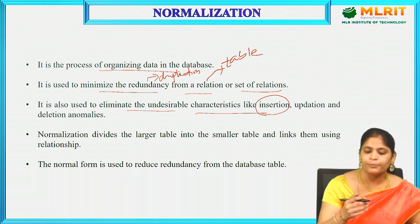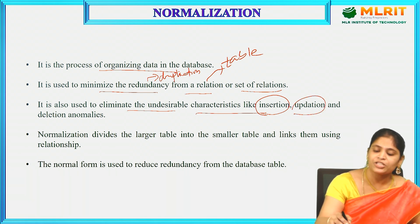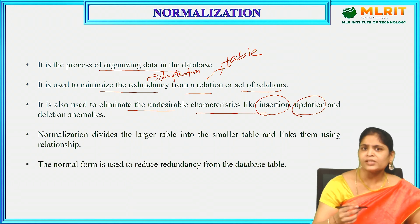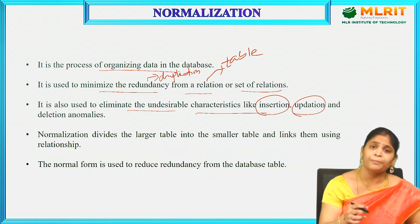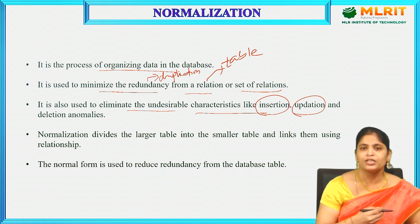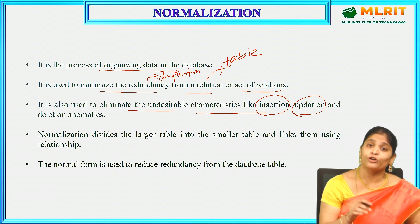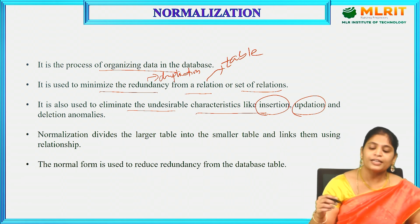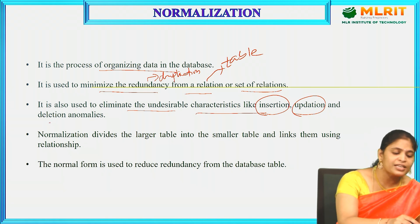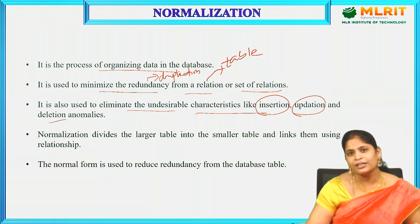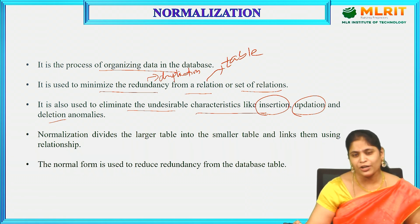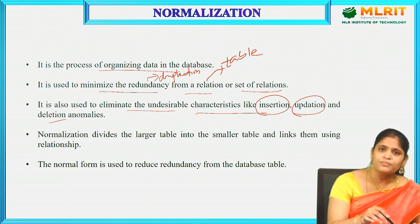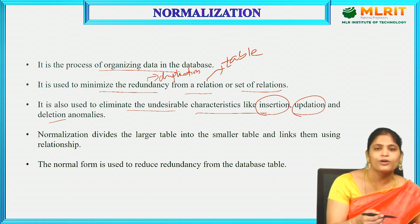Anomaly is nothing but a problem. What is updation anomaly? If I want to update one row, that update must be done in all the rows subsequently. If I forget to update even one row, then the data will become inconsistent — that is what updation anomaly is. What is deletion anomaly? If I want to delete one piece of data, I am forcefully required to delete some other useful data as well. These are the problems which can be reduced by using normalization.